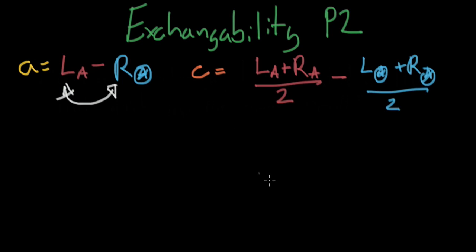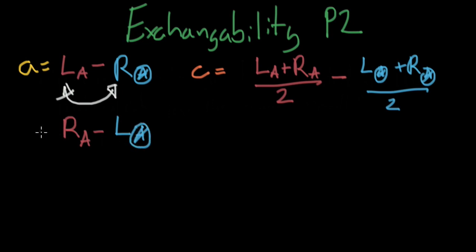So let's assume we have exchangeability. This would mean we could write the right-hand side of the population — the side that was untreated — now being treated, minus the left-hand side of the population — the side that was originally treated — now being untreated, and this will equal the exact same results. So this will actually still equal association. The left-hand side was the side that was treated, the right-hand side was the side that was untreated. If these two sides are exchangeable — similar populations — we can treat the right-hand side and subtract the result from not treating the left-hand side, and we should get the exact same result.